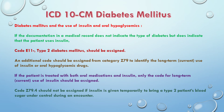Code Z79.4 should not be assigned if insulin is given temporarily to bring a type 2 patient's blood sugar under control during an encounter. For example, if a patient has blood glucose levels that are extremely elevated and insulin is used only during that visit on a temporary basis, Z79.4 should not be used.